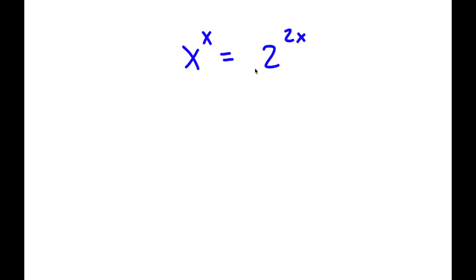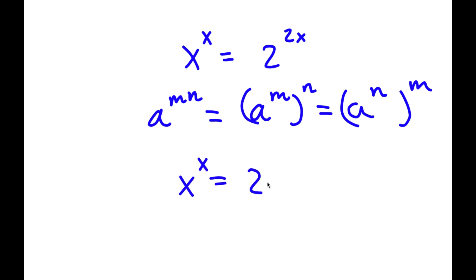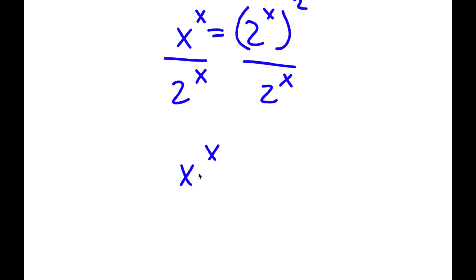Now I have x to the power of x is equal to 2 to the power of 2x. To solve this problem, if I have something in the form a to the power of m times n, this is equal to a to the power of m to the power of n. So I'm going to rewrite 2 to the power of 2x as 2 to the power of x to the power of 2. Now if I divide both sides by 2 to the power of x, I get x to the power of x over 2 to the power of x is equal to 2 to the power of x.